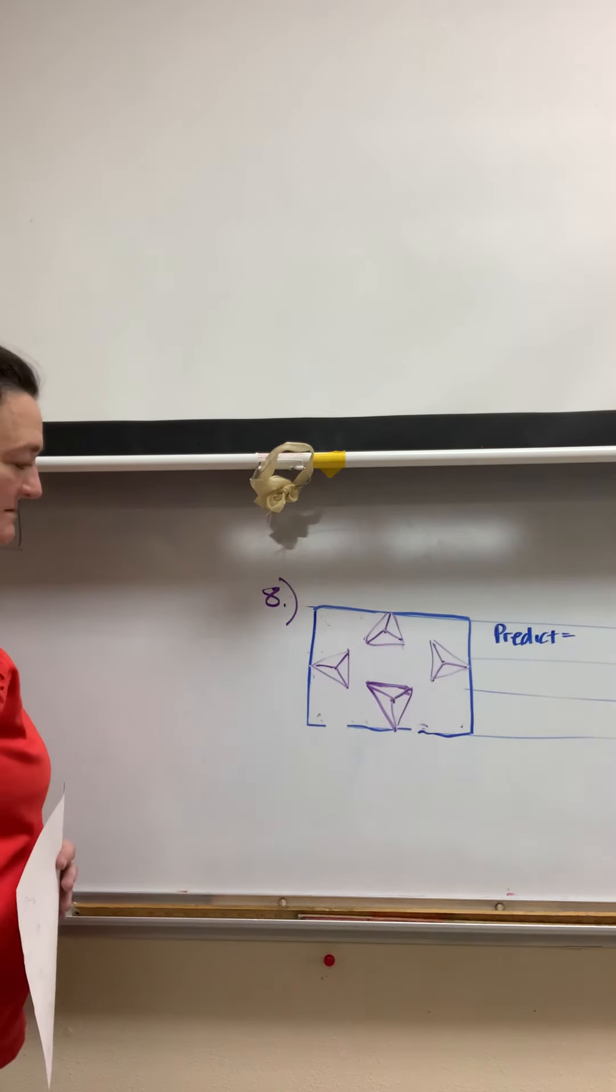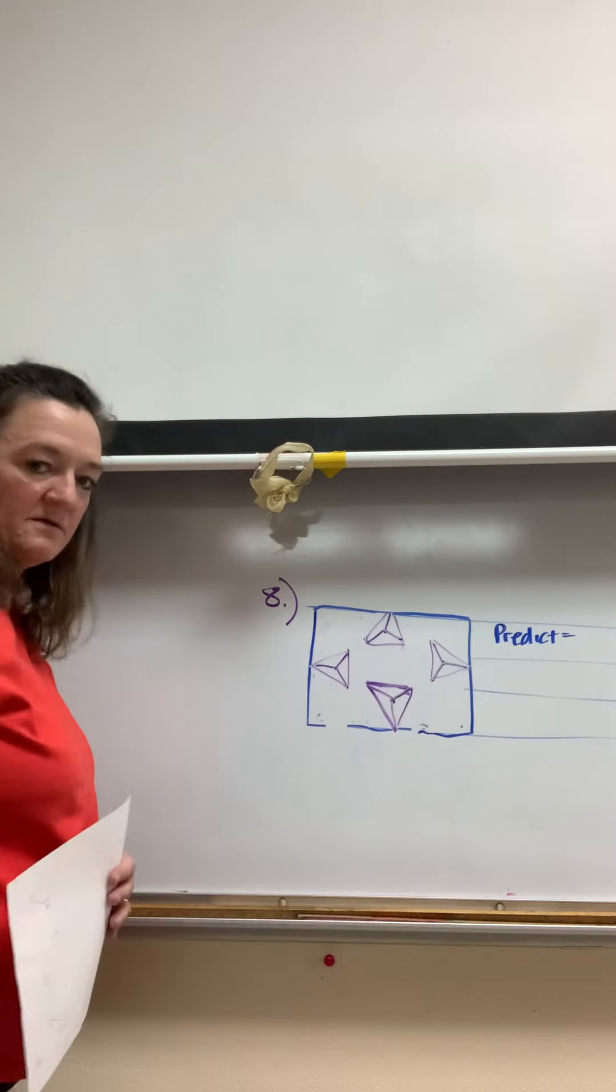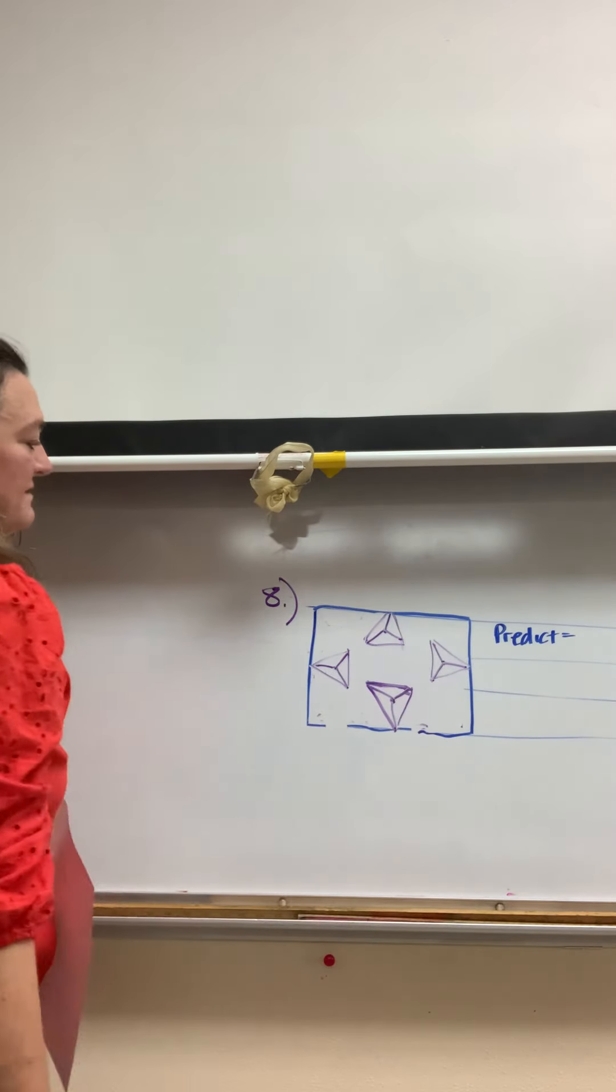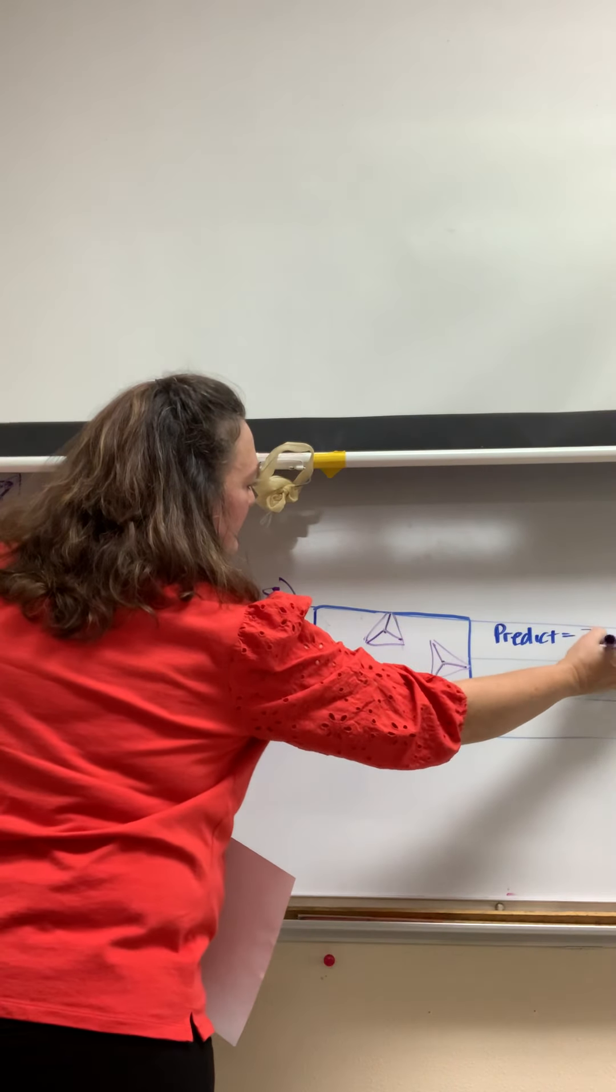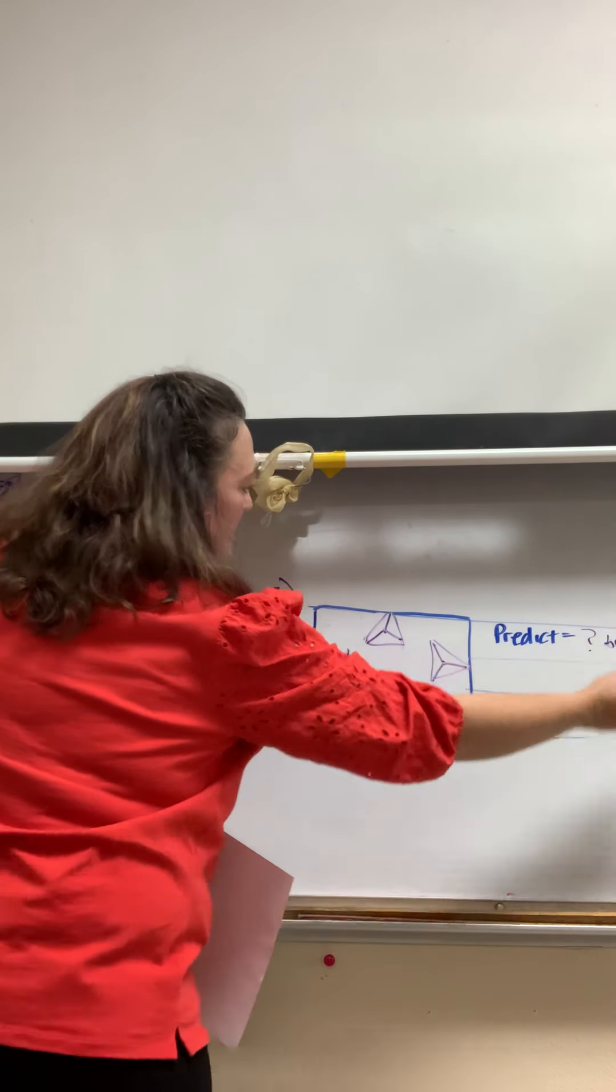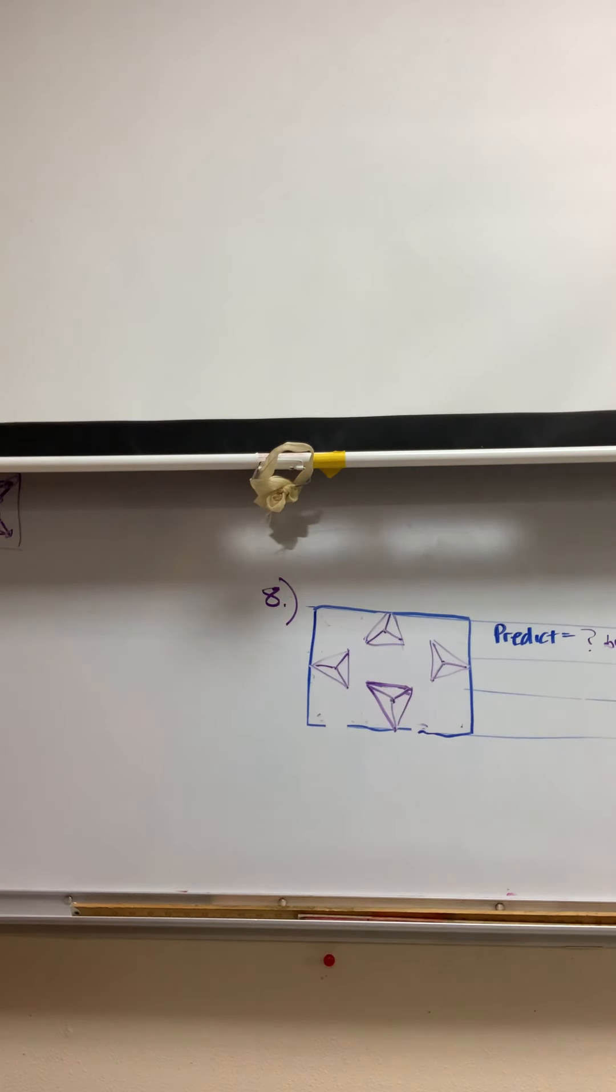Then you're going to write over here to the right, or to the next part of your number eight, and you're going to predict how many books, or whatever you're using at home, it's going to hold. So you have a prediction there.